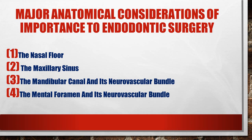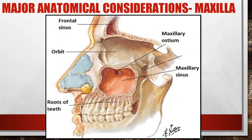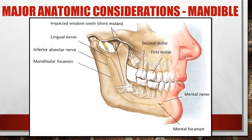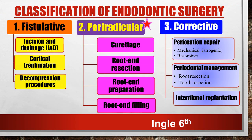The major anatomical considerations to keep in mind before performing endodontic surgery are: the nasal floor, the maxillary sinus, the mandibular canal, and the mental foramen. If you feel that any of these landmarks are going to be hit during your surgery, you want to reconsider, because it can lead to potential serious complications.